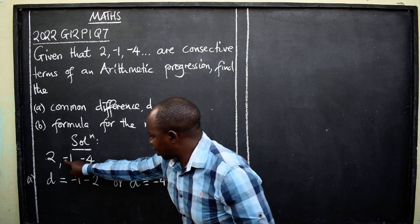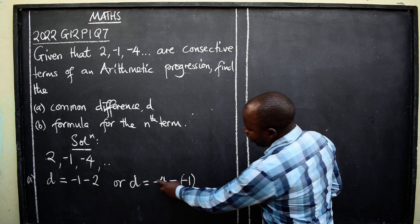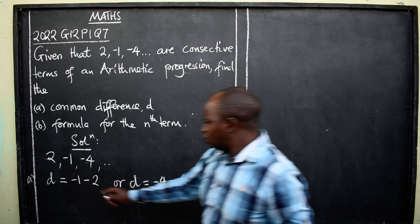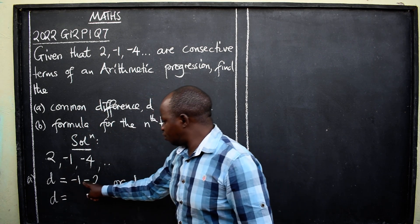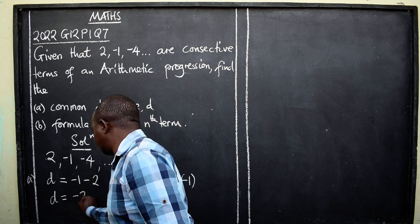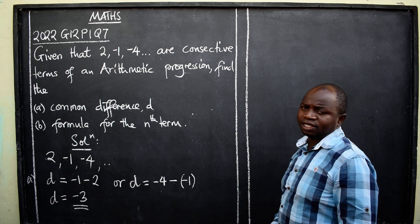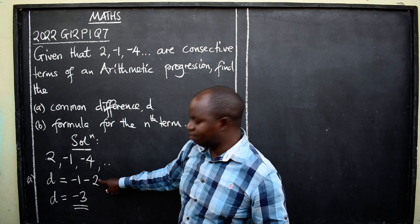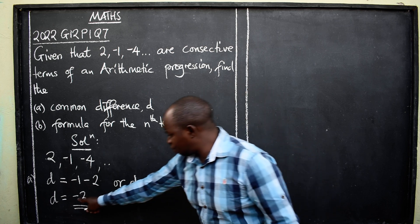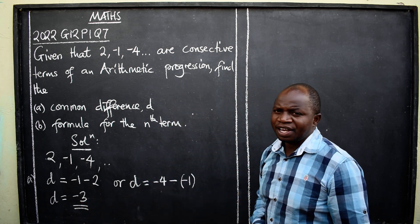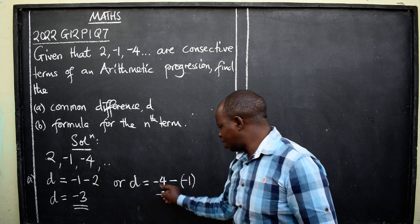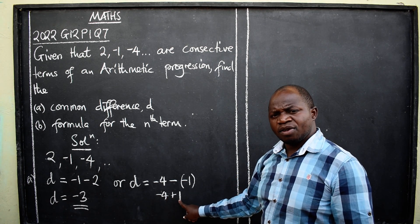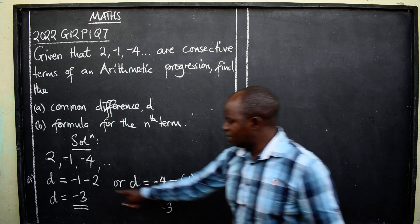Always minus. So d equals negative one minus two, which gives us negative three — that is the answer. Remember integers: same signs add, one plus two is three, sign from the bigger number. Check: negative four minus negative one — negative negative is positive one, different signs subtract, four take away one is three, sign from the bigger number is negative. We get the same answer, negative three.